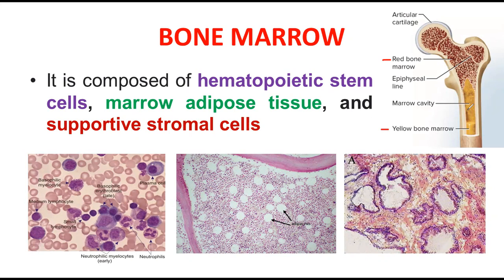Bone marrow is mainly composed of three components: hematopoietic stem cells, marrow adipose tissues, and supportive stromal cells. The combination and coordination of these three types of cells gives rise to the bone marrow, and it is present inside the cavity of the bone.